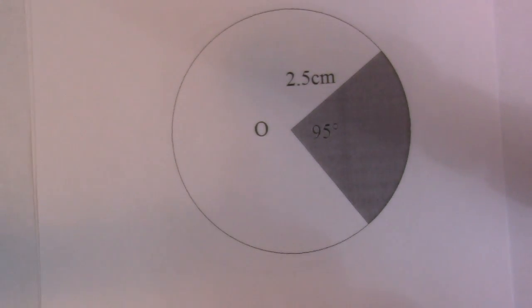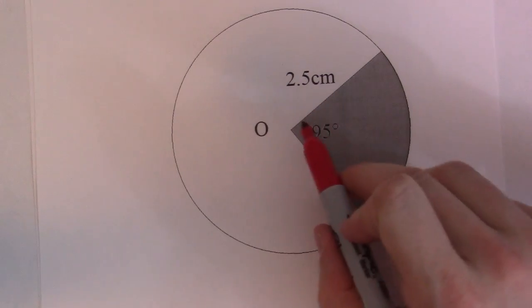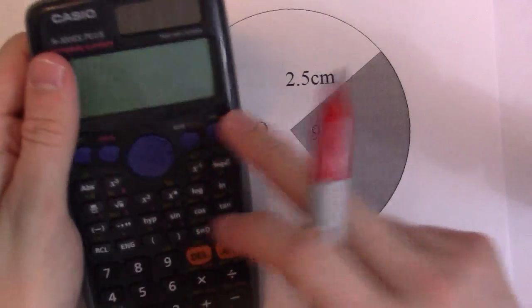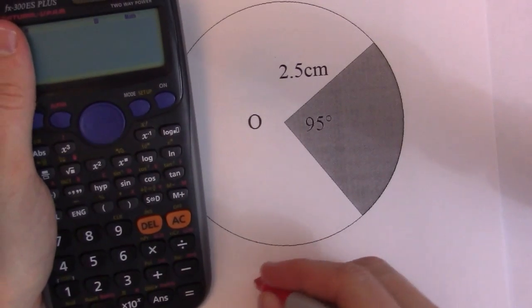Alright, so let's do a couple of examples now. So I've got a question here. So I've got a radius of 2.5 centimeters and I've got an angle of 95 degrees. So I've just got to recognize that this is in degrees, so I'll use this formula.